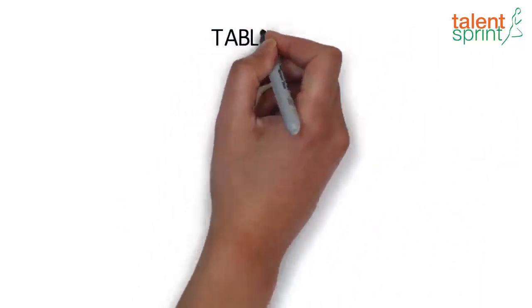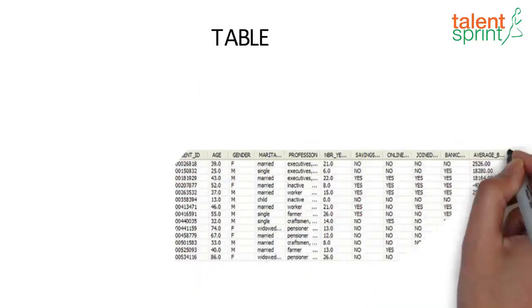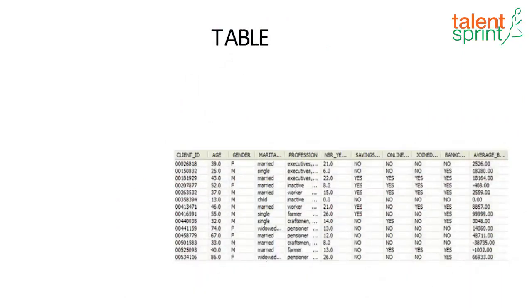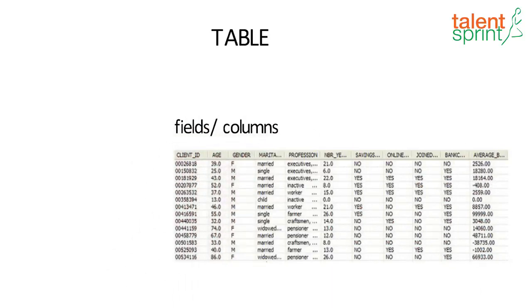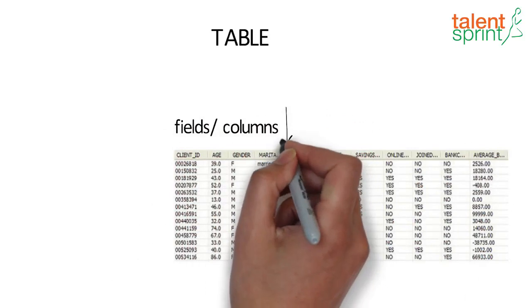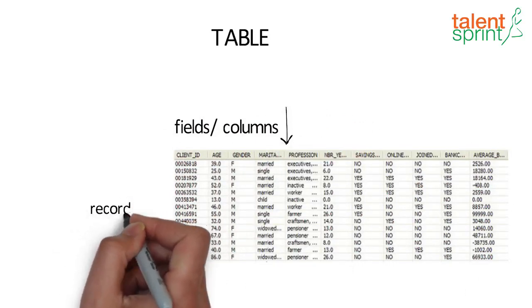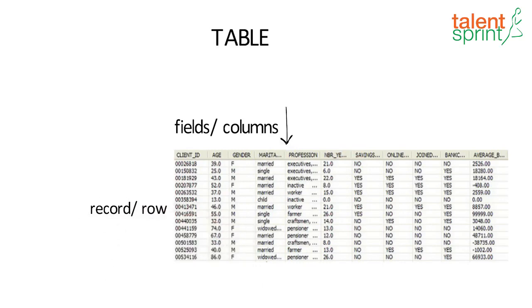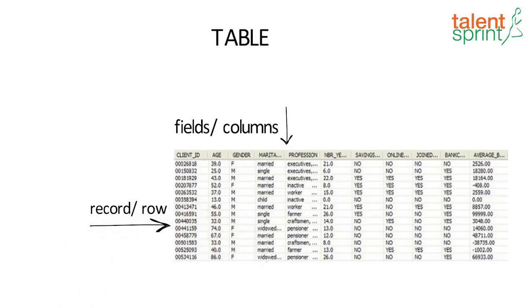Before we jump onto SQL, let's take a look and understand our tables a little better. A table is the most common and simplest form of data storage in a relational database. Every table is broken up into smaller entities called fields, and these are all the columns a table has. A record is also called a row of data — it is simply an individual entry that exists in a table.